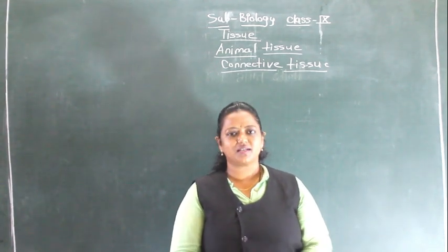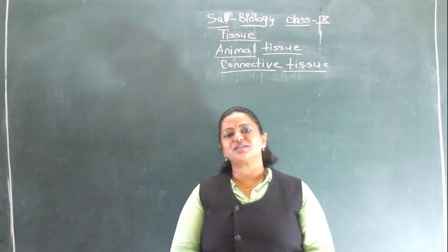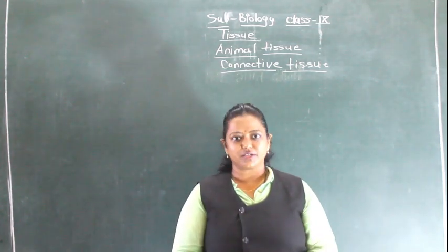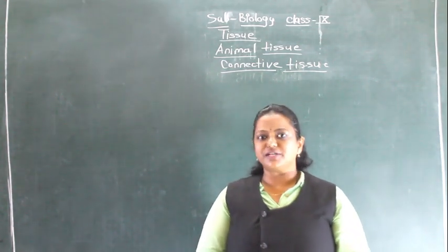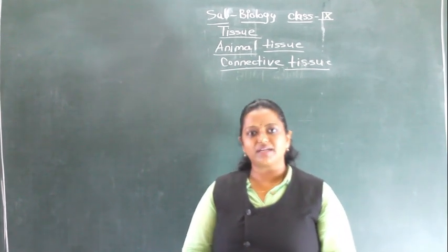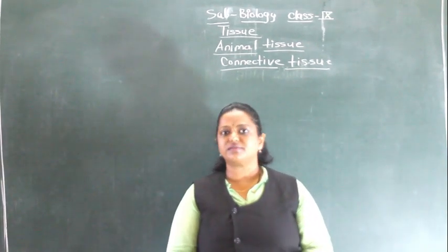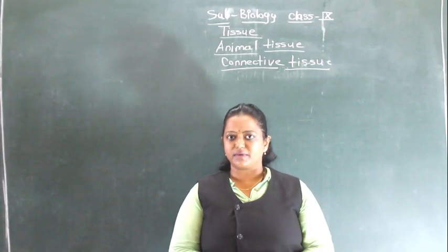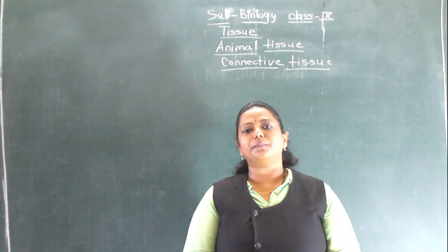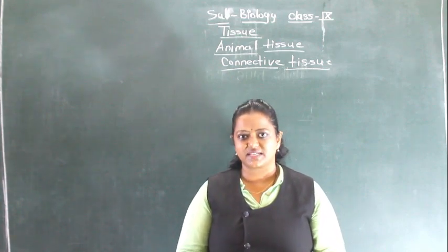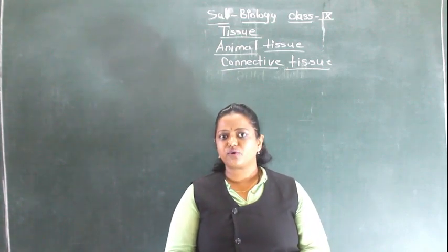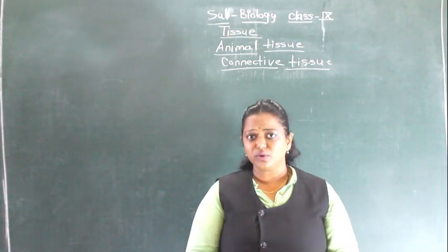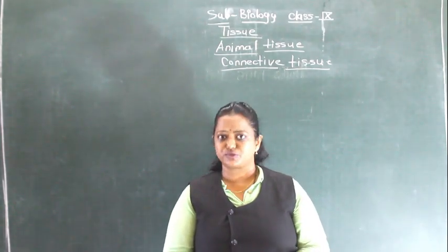Good morning dear students. Welcome to the online class of biology for Class 9. We are looking at our lesson issue. We have completed plant tissue as well as various types of animal tissue. In animal tissue, we have completed two types: epithelial tissue and muscular tissue. There are four kinds of animal tissue, and two animal tissues are still remaining.